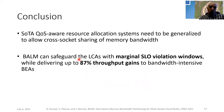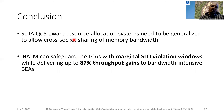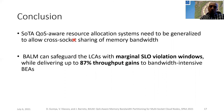In conclusion, we have shown that state-of-the-art QoS resource allocation systems need to be generalized to allow cross-socket sharing of memory. To this end, we propose BALM, which can safeguard latency-critical applications with a marginal SLO violation window while delivering considerable throughput gains to bandwidth-intensive applications. Thank you.